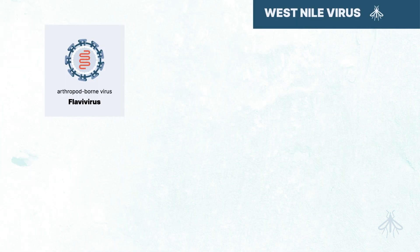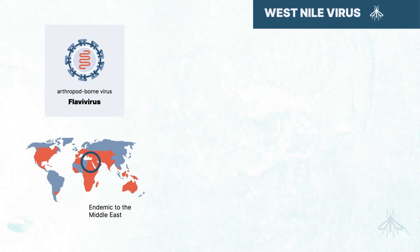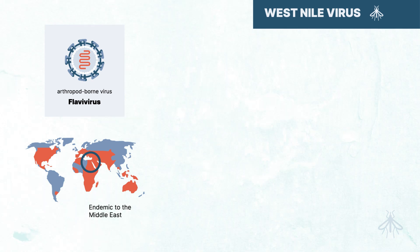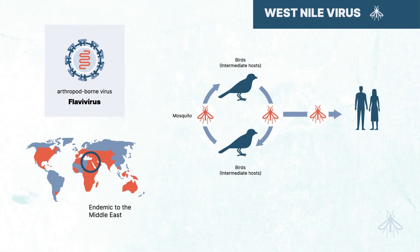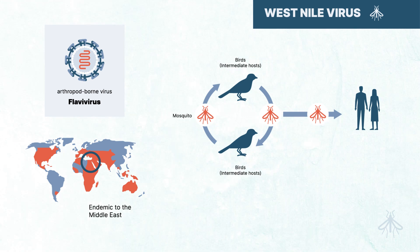West Nile encephalitis is an arthropod virus endemic to the Middle East, but it could also be found throughout the United States. It is transmitted via mosquitoes, with birds serving as the intermediate host.